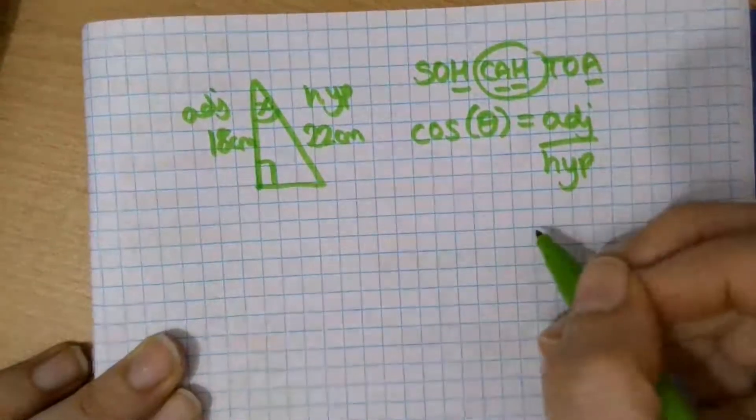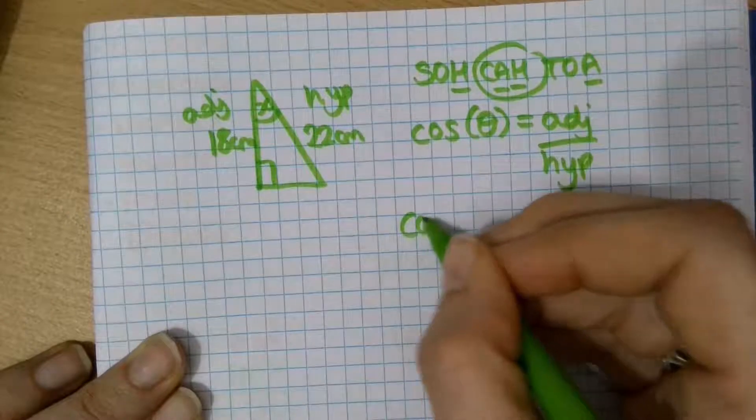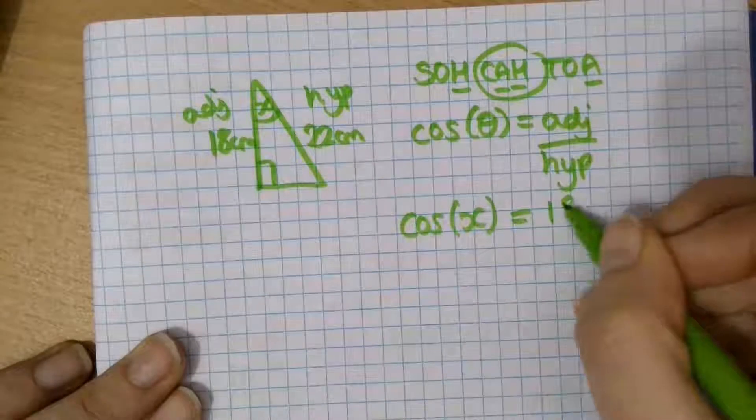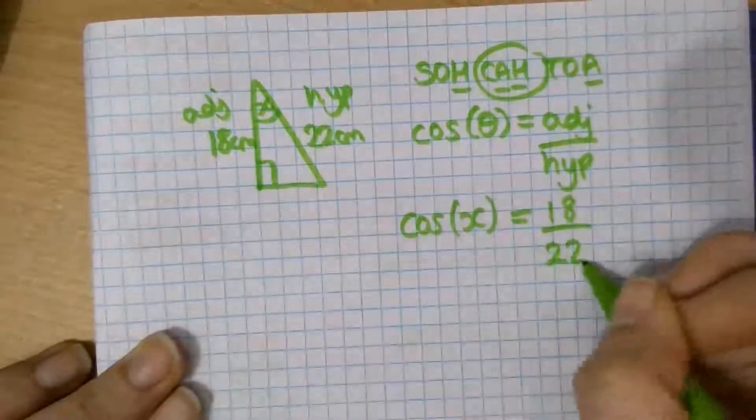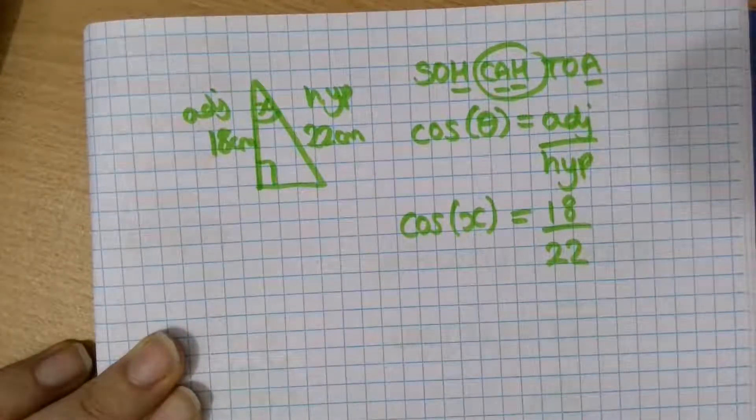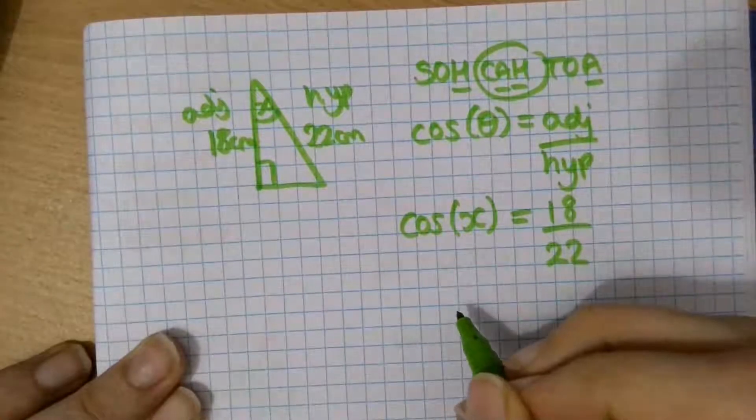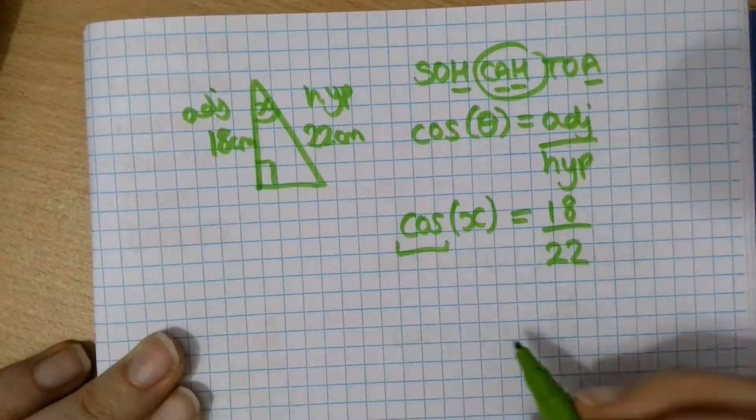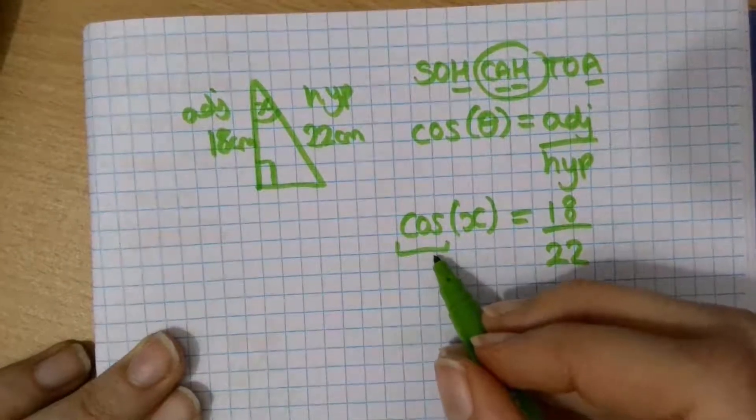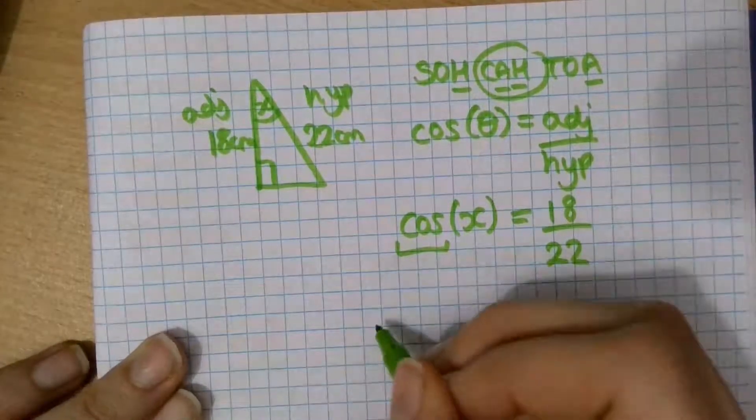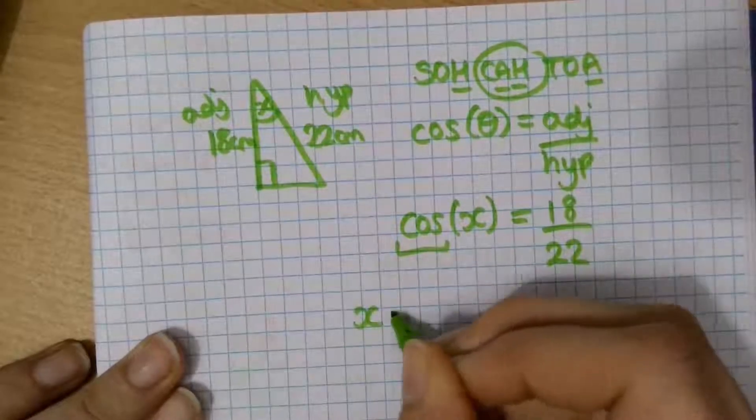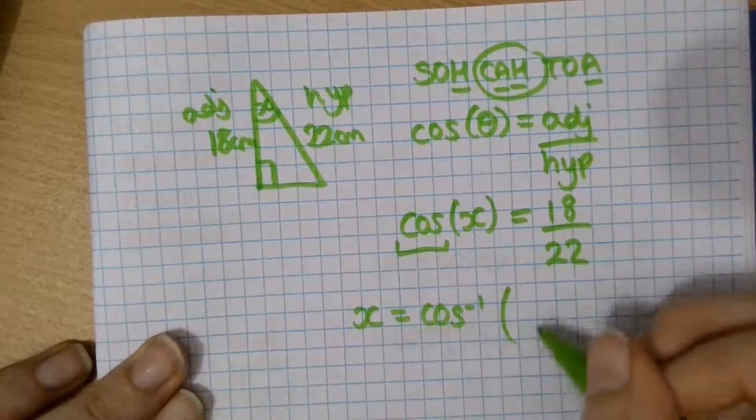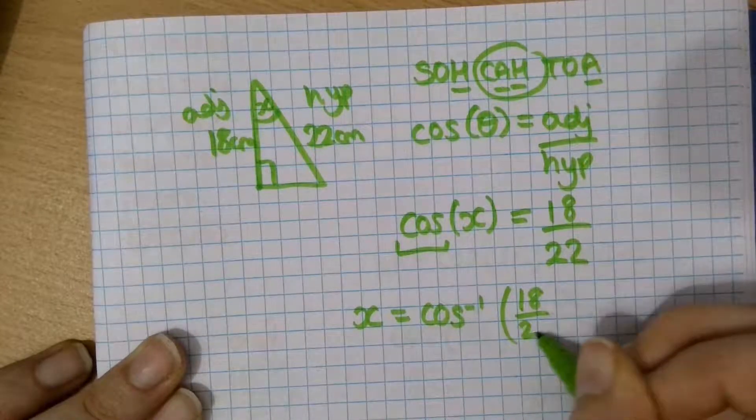So, now we put our numbers in. Cos X, because X is our angle. The adjacent is 18. And the hypotenuse is 22. So, what do we do? Finally. Well, nearly finally. We rearrange. We don't want cos X. We just want X. So, to get the inverse of cos, we press on our calculator. Shift cos. And on paper, we write cos with a little negative 1.